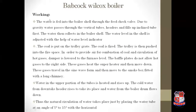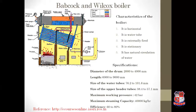Working of the Babcock-Wilcox boiler: water is fed into the boiler shell through the feed check valve. Due to gravity, water passes through the vertical tube headers and fills the inclined tubes first, then the water level in the boiler shell is adjusted with the help of a water level indicator. Water first fills the bottom area of the water tubes, then the headers, and finally the cylindrical shell space.